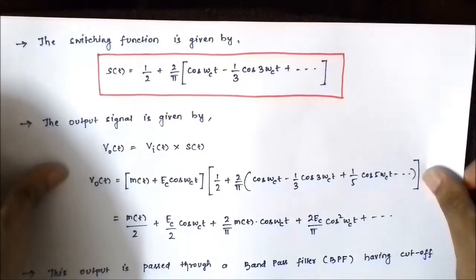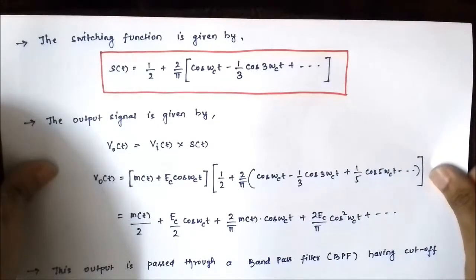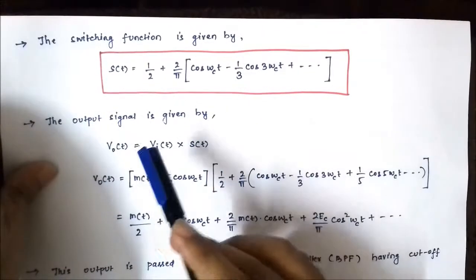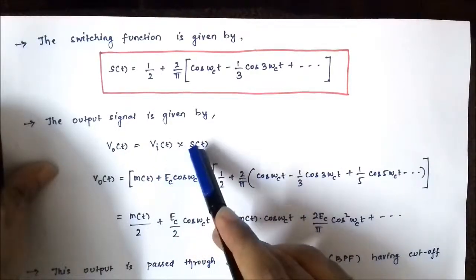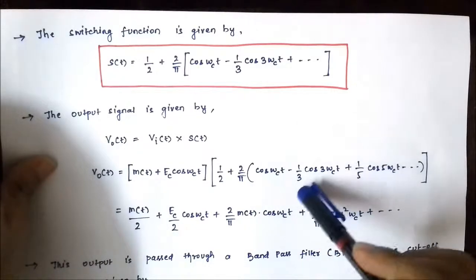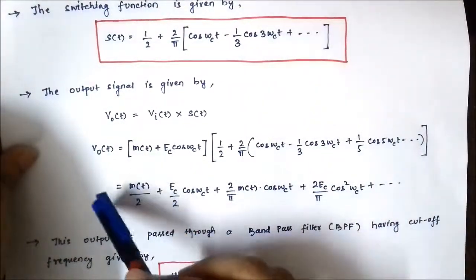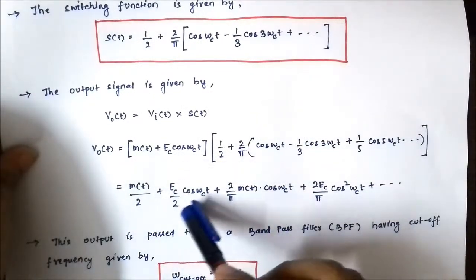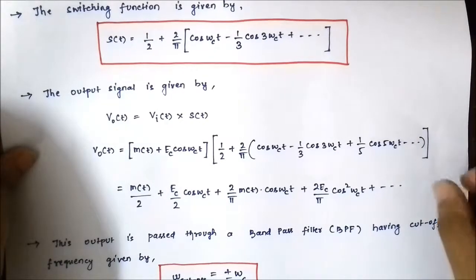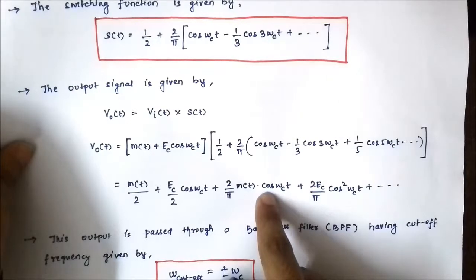The output signal fed to the band pass filter is given as the product of the combined input signal — the addition of the message and carrier signal — multiplied by the switching function. This can be written as [m(t) + EC cos(ωc·t)] × [1/2 + (2/π)cos(ωc·t) + ...]. On simplification, we get the terms: m(t)/2, EC cos(ωc·t)/2, (2/π)m(t)cos(ωc·t), and higher order terms.